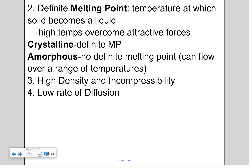Solids have a definite melting point — a temperature at which they become a liquid. As you increase the temperature, it overcomes the attractive forces holding that crystalline structure in its fixed position. With a crystalline solid, there is a specific definite melting point. But with amorphous solids, there's really no definite melting point — it can flow over a wide range of temperatures. Glass is a great example; you could heat it with a Bunsen burner at varying temperatures, and there is no definite melting point.